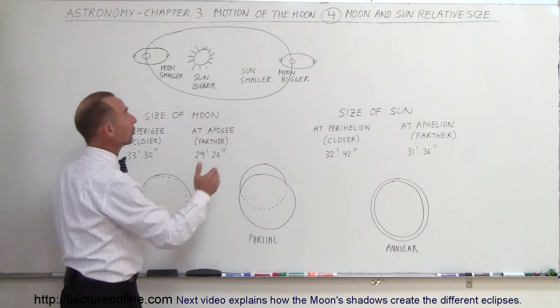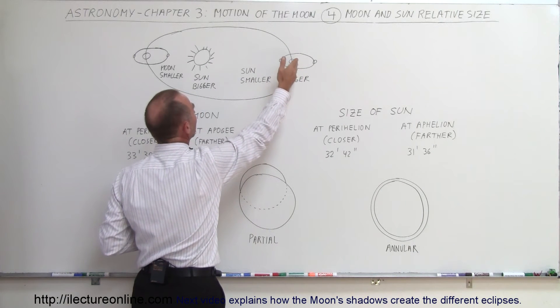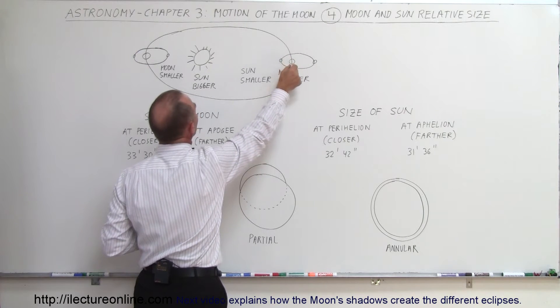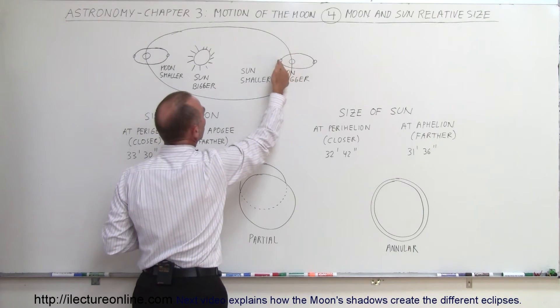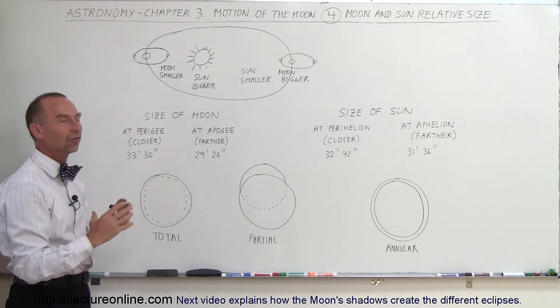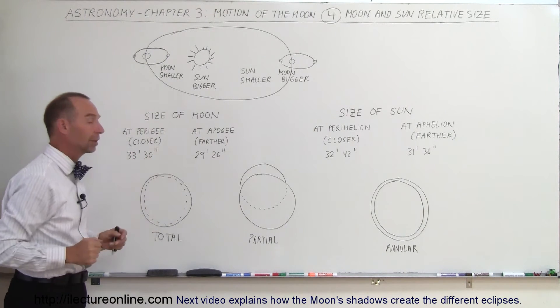The other extreme case is when the Earth is farther away from the Sun than normal, and so that would be at the apogee or aphelion here, I should say, and then the Sun will appear smaller, and in this case, the Moon would be closer to the Earth, so it will appear bigger, a bigger Moon disk, a smaller Sun's disk, the Moon's disk can easily cover up the Sun's disk, and you have a total solar eclipse.